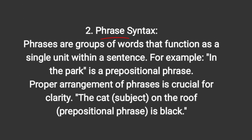The second type is phrase syntax. Phrases are a group of words that function as a single unit within a sentence. For example, 'in the park' is a prepositional phrase. Proper arrangement of phrases is crucial for clarity. In 'the cat on the roof,' 'the cat' is the subject and 'on the roof' is a prepositional phrase — 'on' is a preposition, just as 'in' is a preposition.